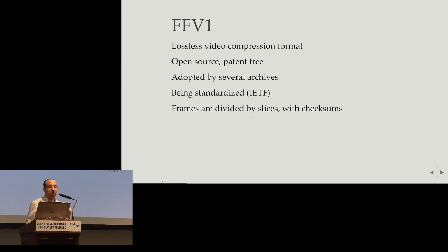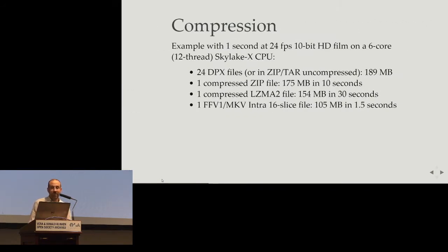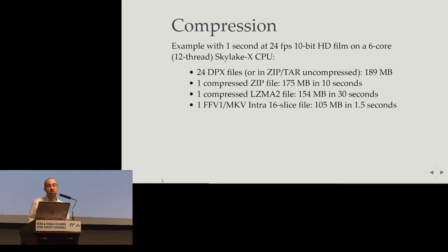FFV1 also permits you to divide the frame by slice — Peter talked about that this morning. But we didn't talk about the compression. Sometimes you may want to just zip the files and call it okay, but zipping TIFF or DPX files is not so performant. For one second of content, you need 10 seconds for the compression, and the compression ratio is pretty bad.